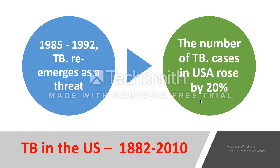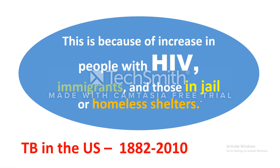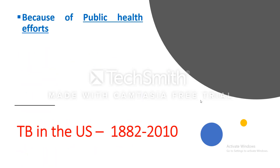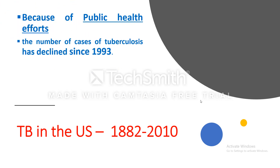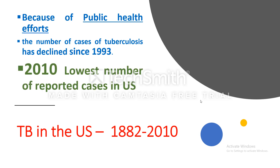From 1985 to 1992, tuberculosis re-emerged as a threat and the number of TB cases in the USA rose by 20%, due to the increase in people with HIV, immigrants, and those in jails or homeless shelters. Because of public health efforts, the number of cases has declined since 1993, reaching the lowest number of reported cases in the US in 2010.